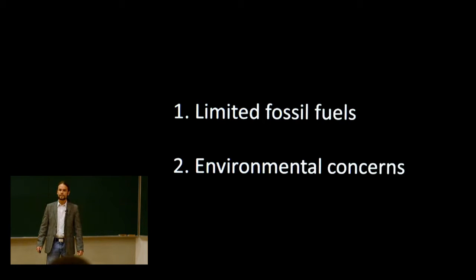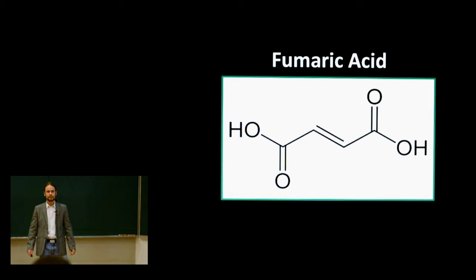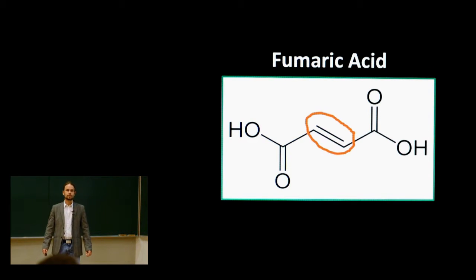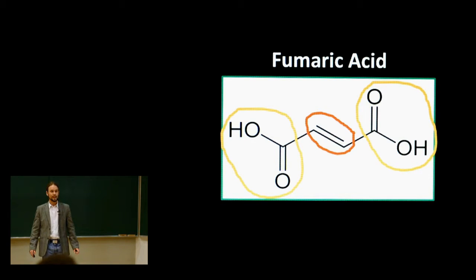One of these chemicals is fumaric acid. Attractive properties of fumaric acid are its double bond and its two carboxylic acid groups. These make it a suitable substrate for chemical synthesis.